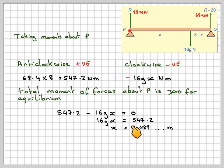So x, dividing by 16g and taking g to be 9.8, gives 3.489 meters, or 3.49 meters. This distance here, the center of mass, is at 3.49 meters from P.